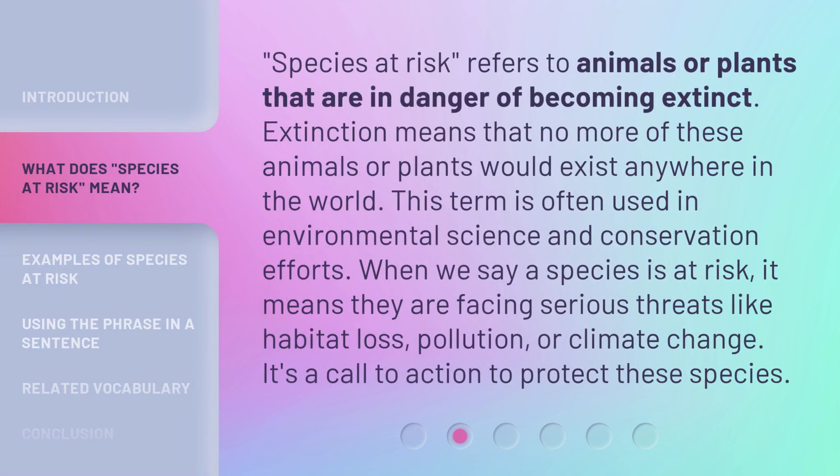Species at Risk refers to animals or plants that are in danger of becoming extinct. Extinction means that no more of these animals or plants would exist anywhere in the world. This term is often used in environmental science and conservation efforts. When we say a species is at risk, it means they are facing serious threats like habitat loss, pollution, or climate change. It's a call to action to protect these species.